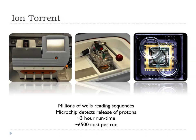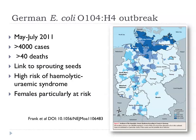Ion Torrent has already been mentioned. It sequences millions of wells simultaneously. It's a microchip that detects the release of protons during the sequencing reaction, around a three-hour run time. It costs in the hundreds of pounds — very cheap, depending on reagent costs and which chip you're looking at.